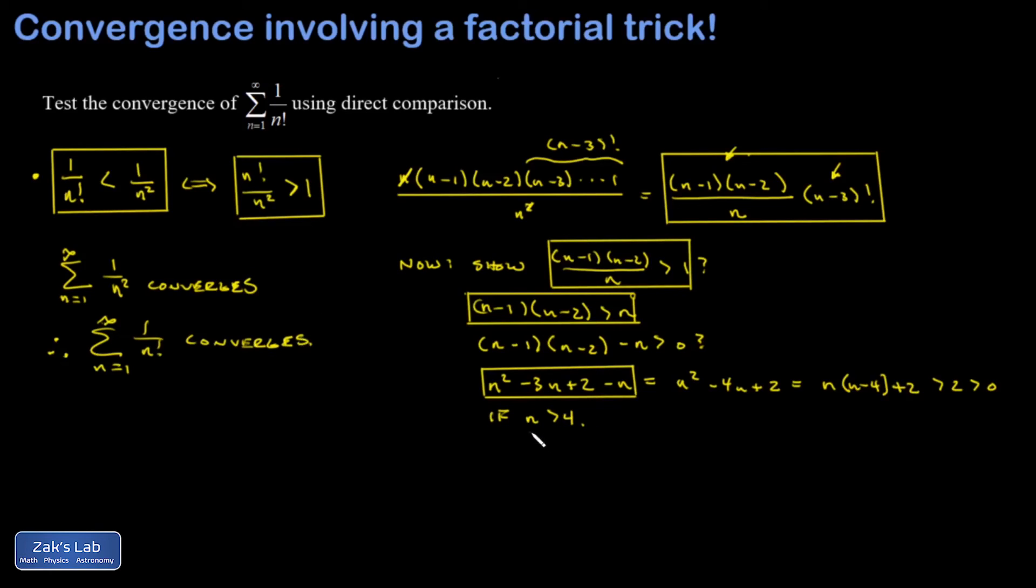So notice there, this was another case where I didn't have that inequality relationship where 1 over n factorial is less than 1 over n squared until I crossed over some kind of cut point, n equals 4.